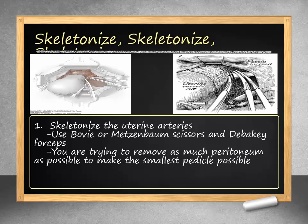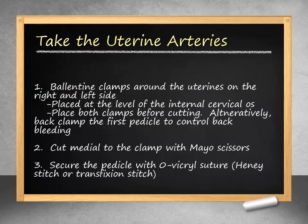Now we are almost ready to address the main blood supply to the uterus — the uterine arteries. In order to maximize hemostasis, we must first skeletonize the uterine arteries by removing any excess peritoneum. This is accomplished with DeBakey forceps and bovie cautery or Metzenbaum scissors. Once skeletonized, you may clamp the uterine artery at the level of the internal cervical os. Place clamps on both the right and left uterine artery before cutting. If this is not possible, you may choose to place a straight back clamp to minimize bleeding. Mayo scissors can be used to cut the pedicle. The pedicle is then suture ligated with Vicryl suture in a Heaney fashion or with placement of the suture at the tip and tied behind the clamp.